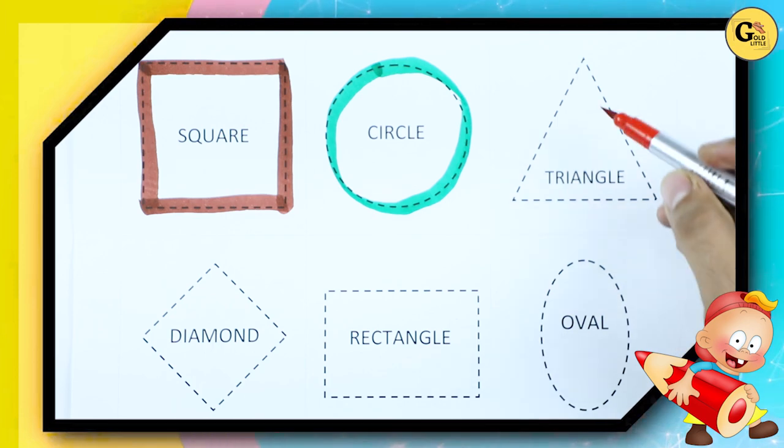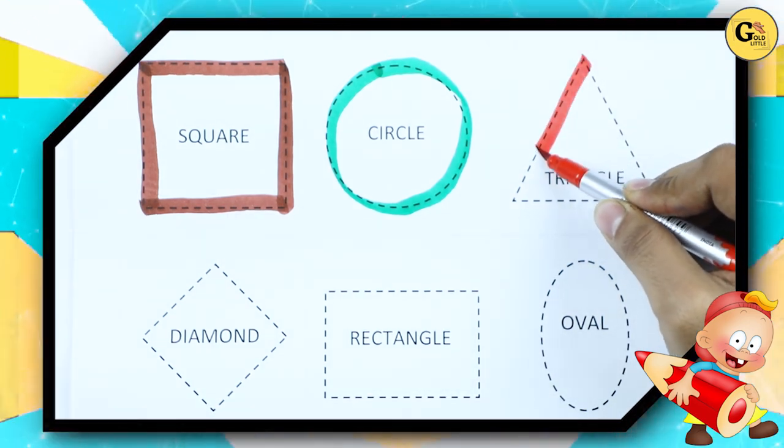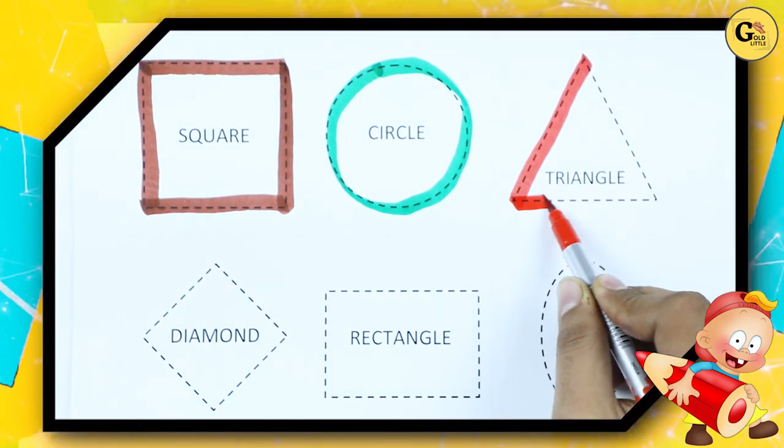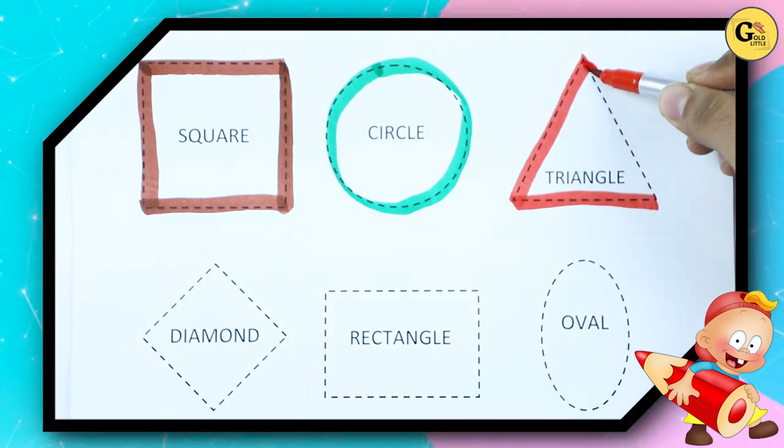Triangle. We make triangle shape with red color. It's a triangle.